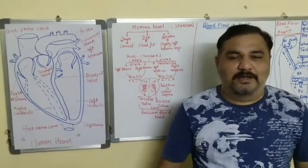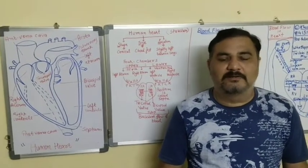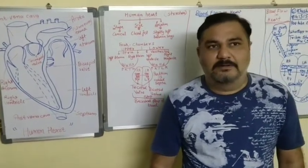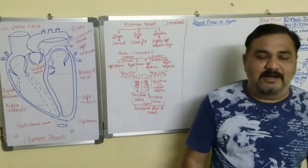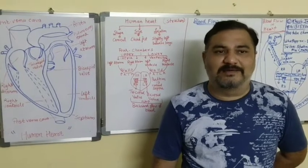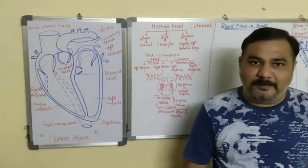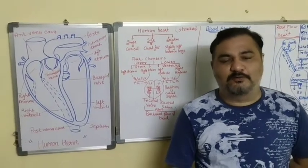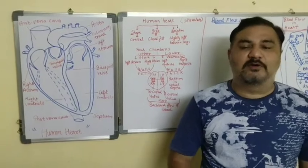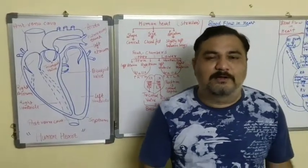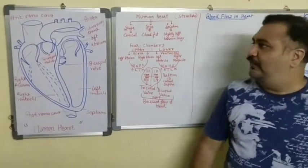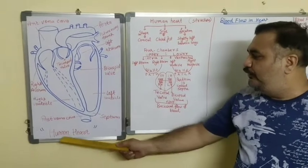Today we are going with a new topic which comes under the section of circulation - that is the circulatory system. The most important topic again is the heart. In heart, the topics are divided into two parts: the first part is known as structure of heart and another part is known as working of heart. First we will move with structure of heart - here we have a diagram of the human heart.